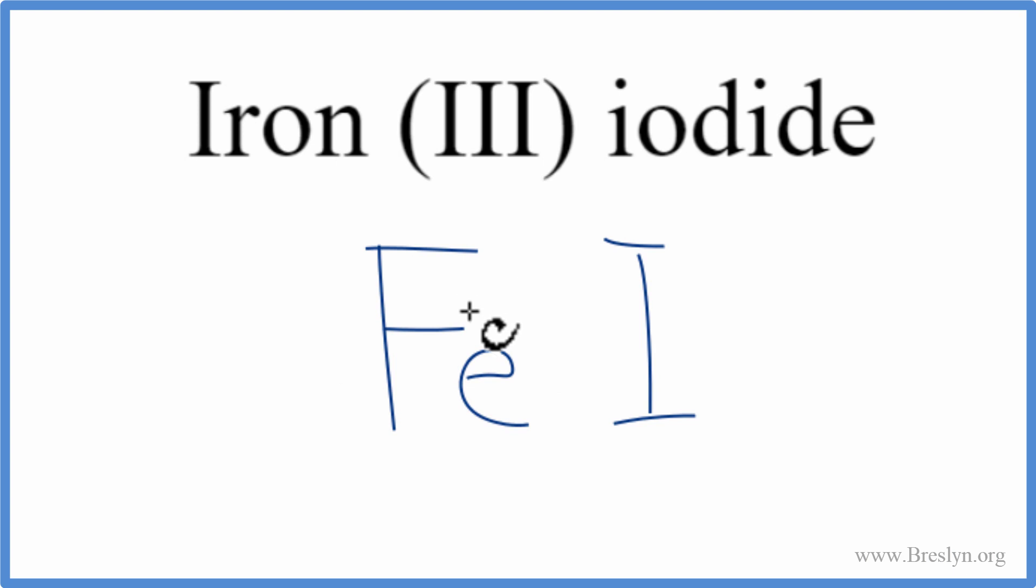So we have a metal here with the iron, the iodide. That's a non-metal. So a metal and a non-metal, that gives us an ionic compound.